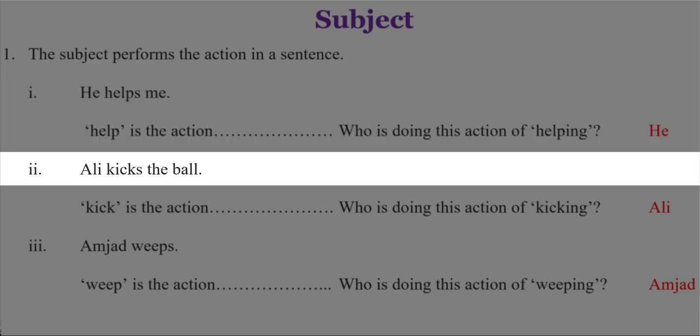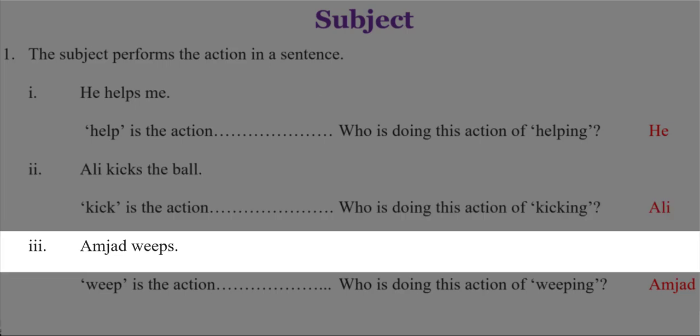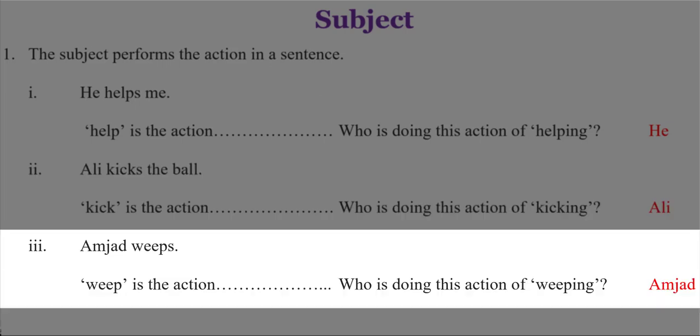'Ali kicks the ball.' Kick is the action, and who is doing it? Ali is kicking. Ali is the performer, so Ali is the subject in this sentence. 'Amjid weeps.' The action of weeping is being done by Amjid, so Amjid is the subject in this sentence.